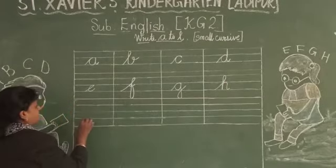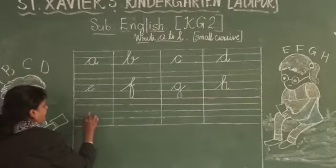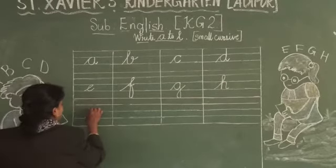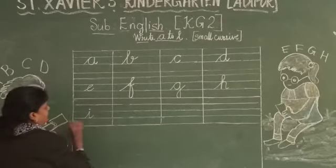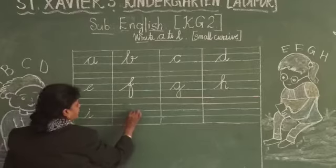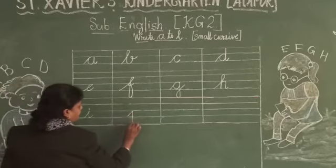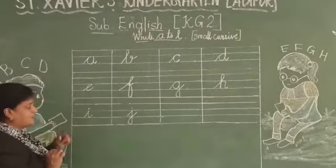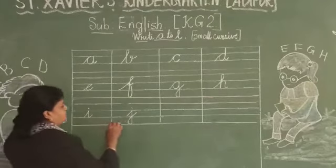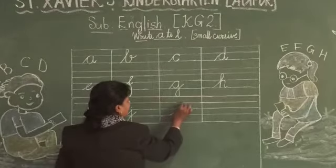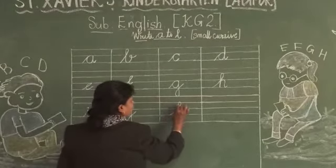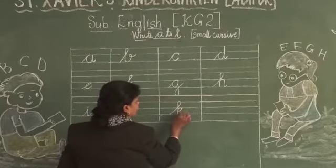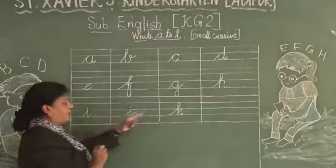After H, you will write I. I is for Ice Cream. I is for India. After I, J. J is for Jug. J is for Jelly. After J, K. Then you go up, you come down, and then you make a small stroke up. This is your K.